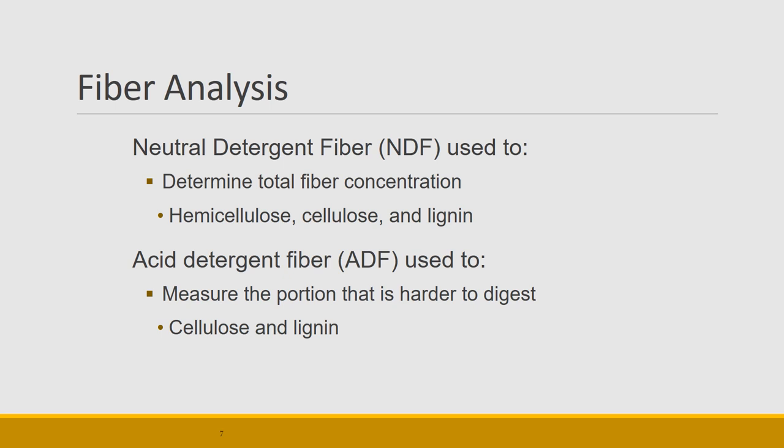Fiber content used as an energy source is measured as neutral detergent fiber (NDF), which tells us how much cell wall content — hemicellulose, cellulose, and lignin — animals are eating. Acid detergent fiber (ADF) measures the hardest portion to digest: cellulose and lignified cellulose. Eventually all those fibers can become energy in the animal through the relationship that ruminants and hindgut fermenters have with microbes in their gut, which convert fiber into volatile fatty acids.